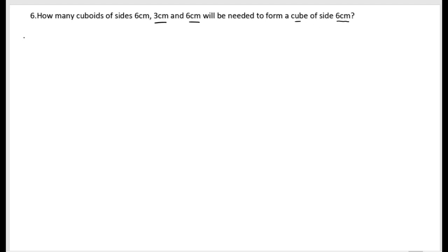Let us find out. To do that, let us write the given information. They have given sides of cuboid: 6cm, 3cm, and 6cm.